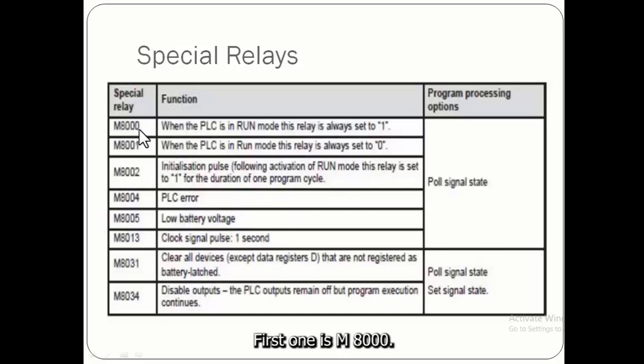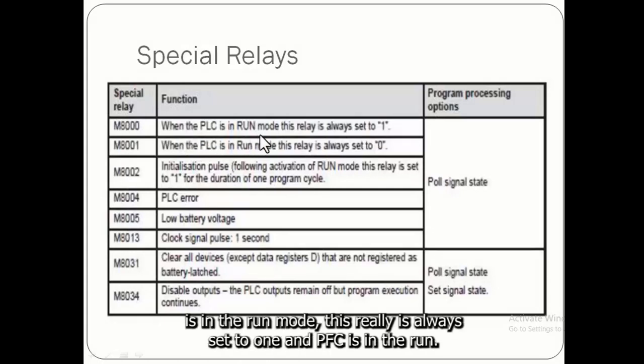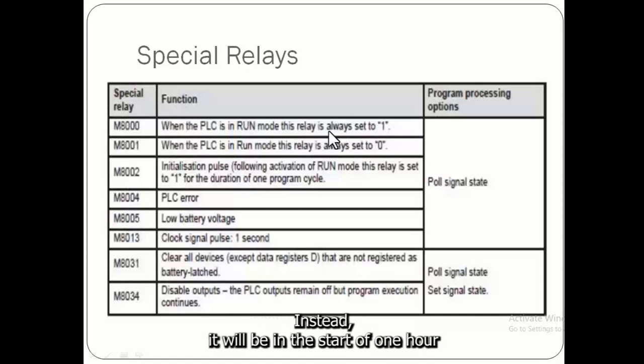First one is M8000. It is used when the PLC is in run mode, this relay is always set to 1. When PLC is in the running state it will be in the state of 1 or running state.